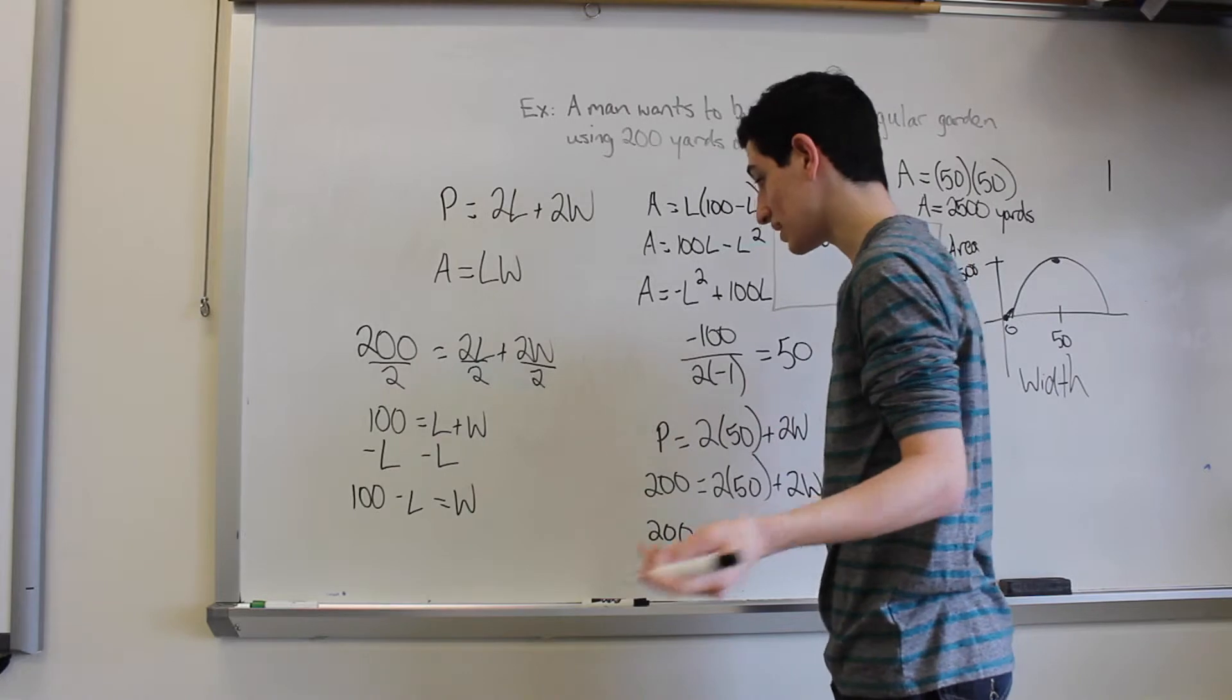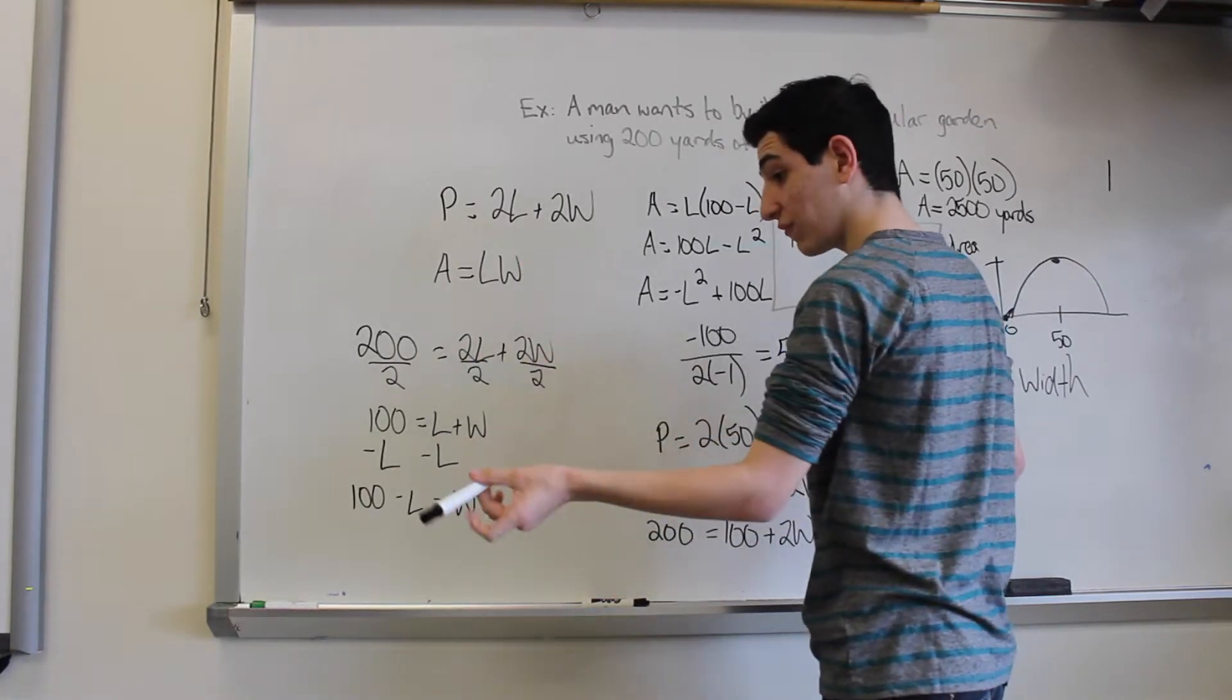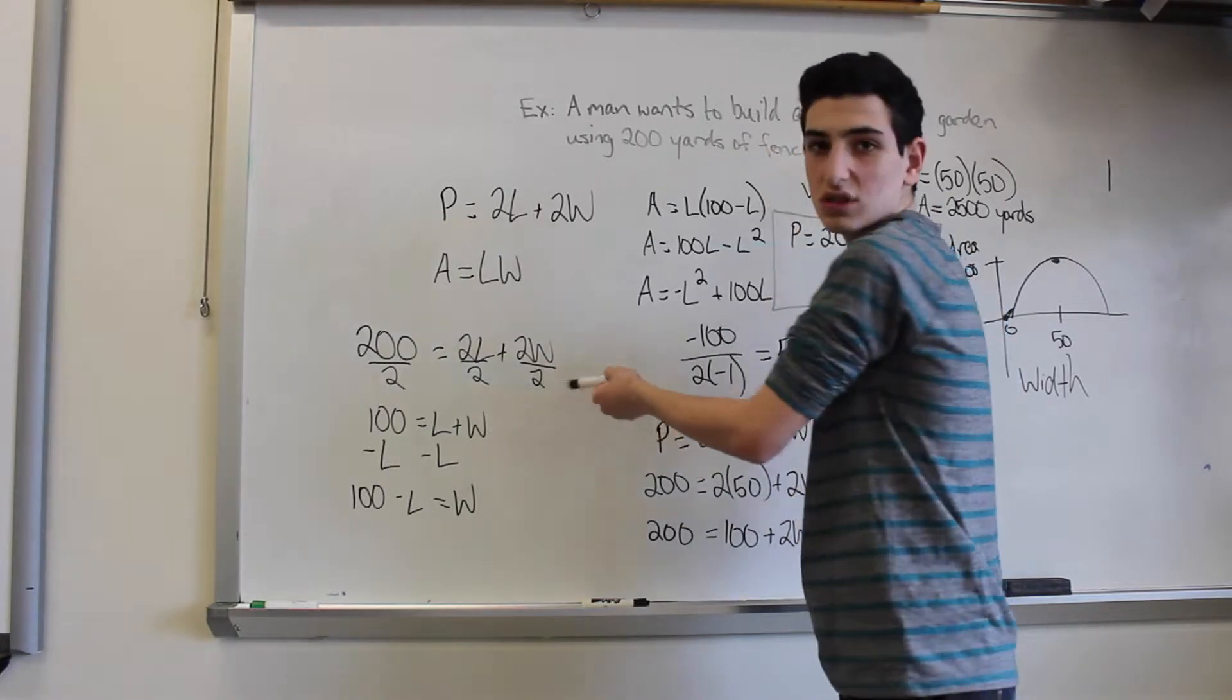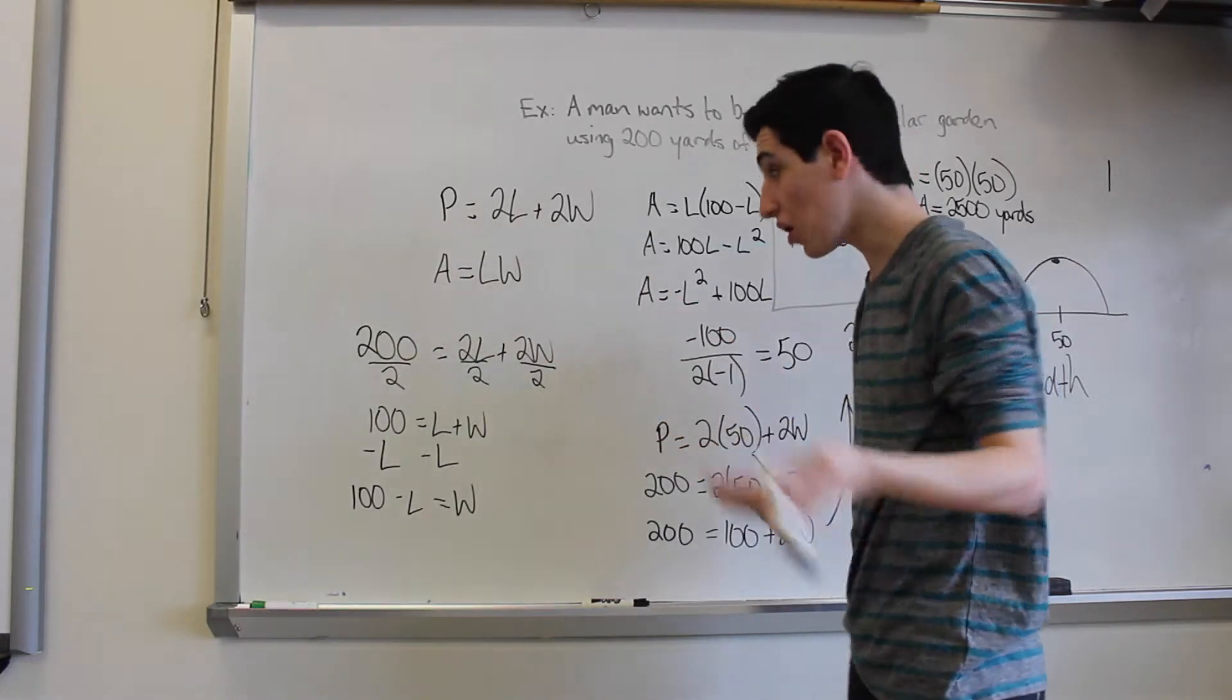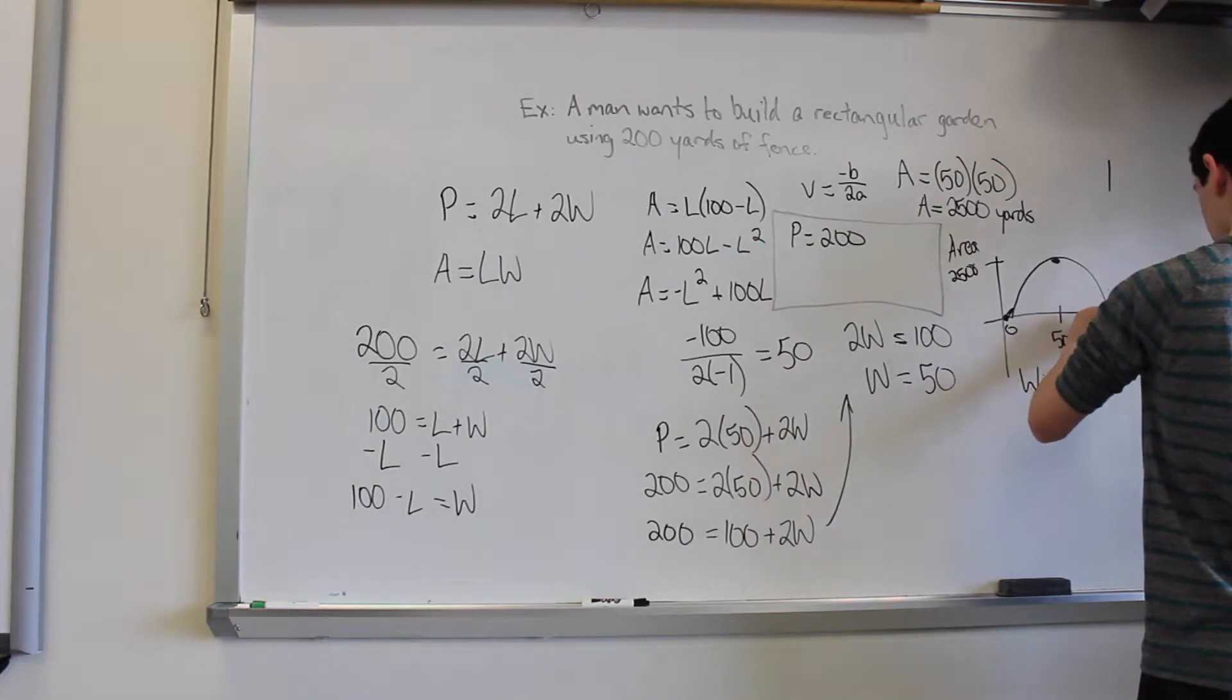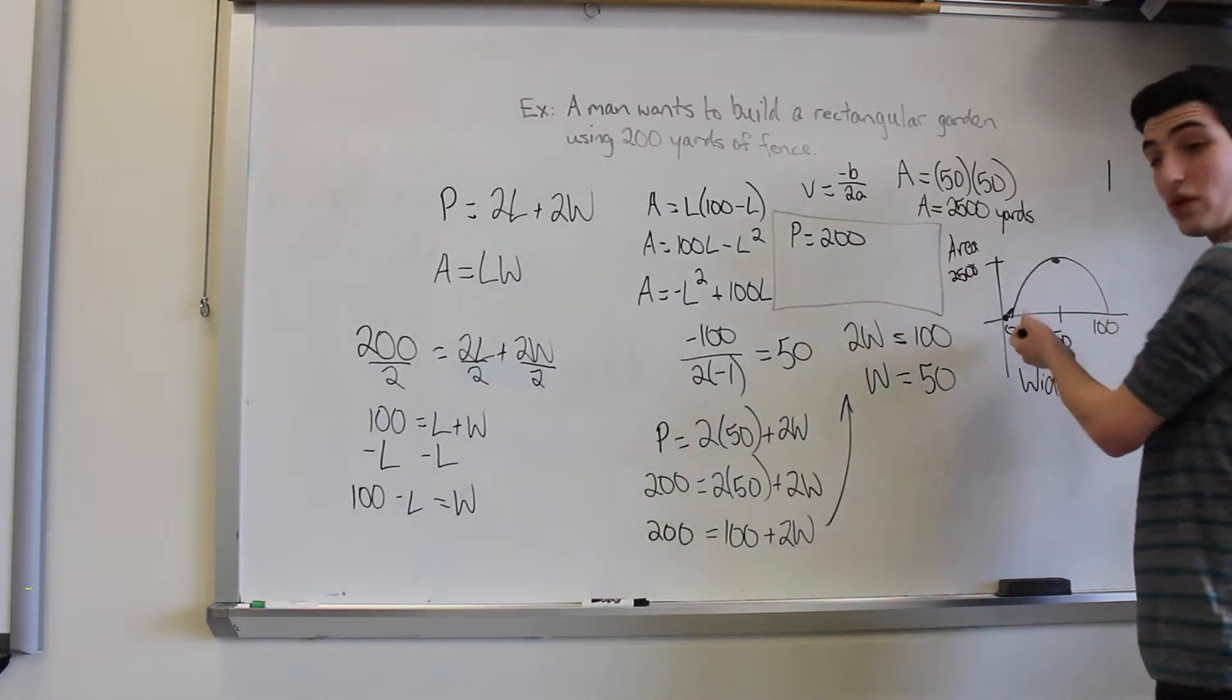And just to make it simple, we know that if you reverse it, you can make this 0 and 2W equals 200. It's the same thing. So our width could also be 100 maximally. And we have our graph.